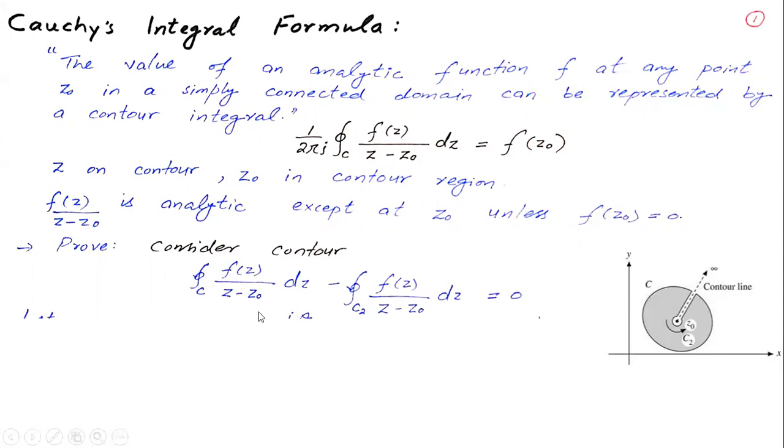We have seen this relation in the last lecture. The contour integral counter-clockwise on C minus the contour integral on the small circle C2 equals zero. So the contour integral on C equals the integral on the small circle, where the negative becomes positive when we reverse the direction.